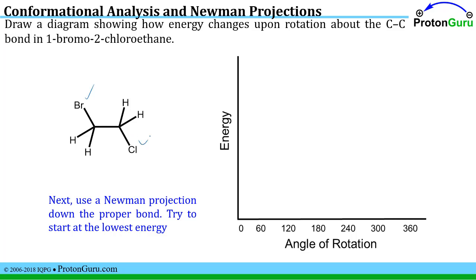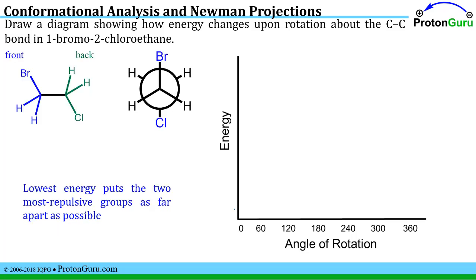Newman projections are the best for easily seeing whether groups are repelling each other or not, comparing staggered and eclipsed conformations like we did in the previous problem. Let's draw a Newman projection and try to start at the lowest energy, so we can start at the bottom of our energy diagram and see how the energy changes as we rotate. The lowest energy Newman projection is the one where you put the two groups that repel each other the most as far apart as possible — a staggered conformation. The bromine and chlorine will repel each other because they're both partial negative ends of polar bonds; negative repels negative.